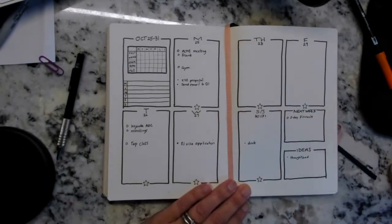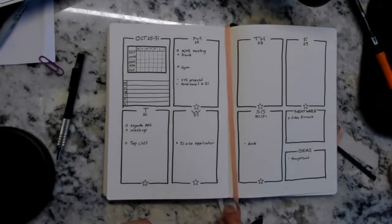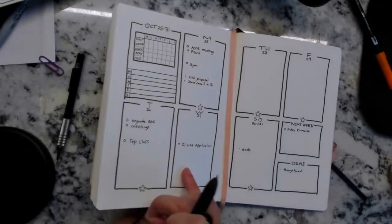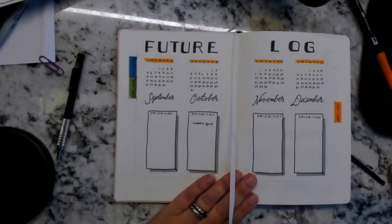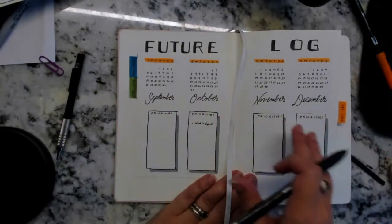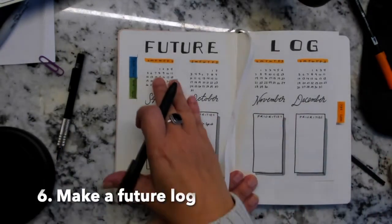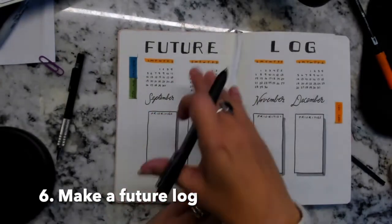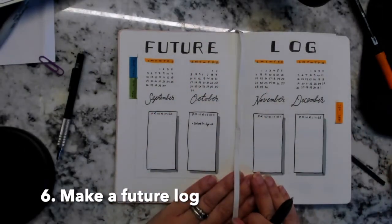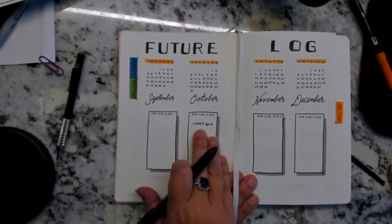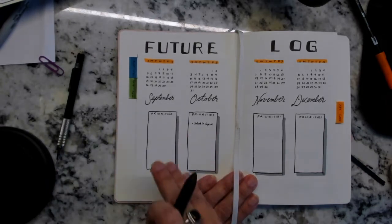The other thing that bullet journals do is if you set up your bullet journal, you can also set up an annual that just is a great space to look at what the months look like, when are the weeks, how do they play out. So I put the LinkedIn sprint here in October just to remind me that that was a big thing.